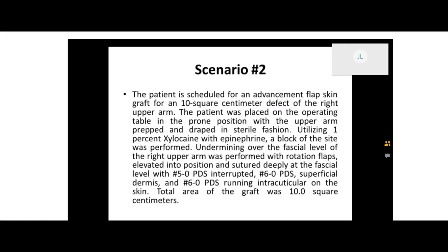We go back to our op report, and the first sentence tells us the patient is seen for a 10 square centimeter defect on the right upper arm. So under transfer, I'm going to go to skin, and then upper arm. And we see the number 0, then H, X, E, X, D, Z — so on this one we get all seven characters in one spot. We don't even have to go to the table, unless you want to flip there to verify that your characters are correct.